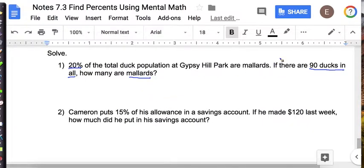Okay, so I'm going to take 90 and do the 10% trick. So move it one to the left. So I get 9. And now I have to double that to get 20%. So 9 times 2 is 18 mallards.